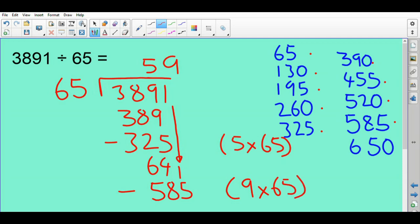We'll have a really big remainder here. So that's nine times 65 there, and my remainder is 641 take away 585, which is 56 by my calculation. So 59 remainder 56.